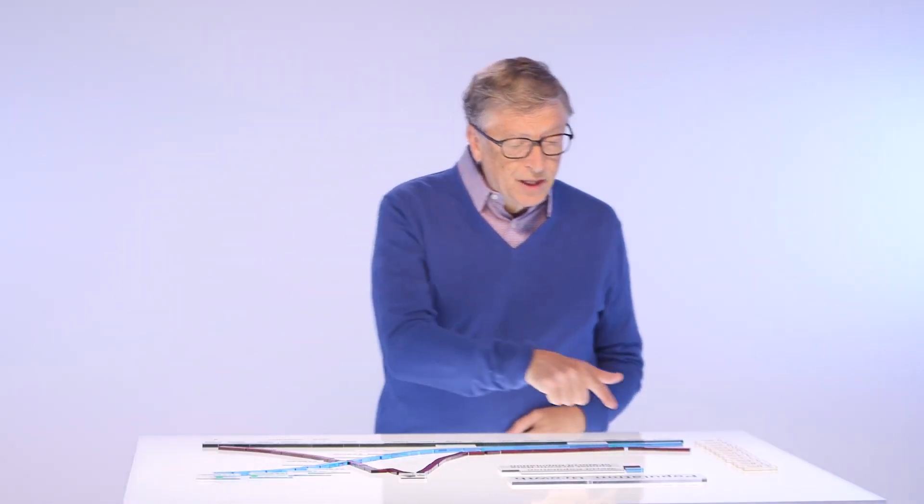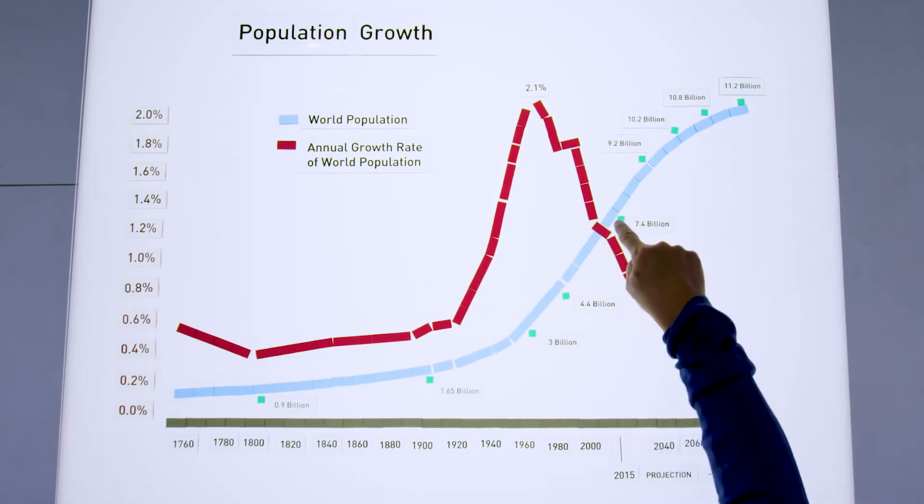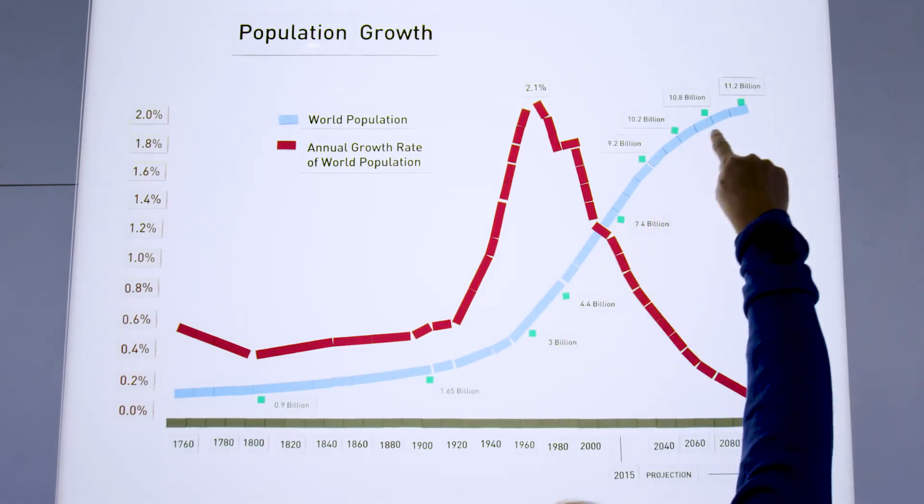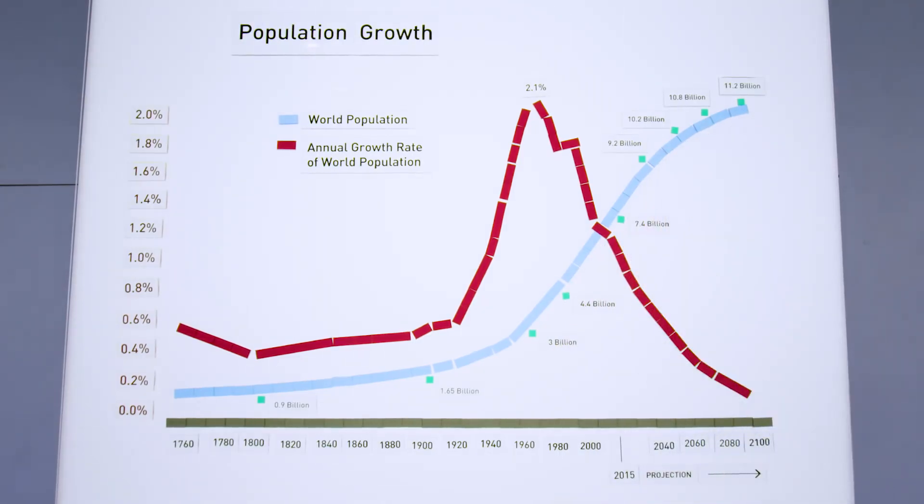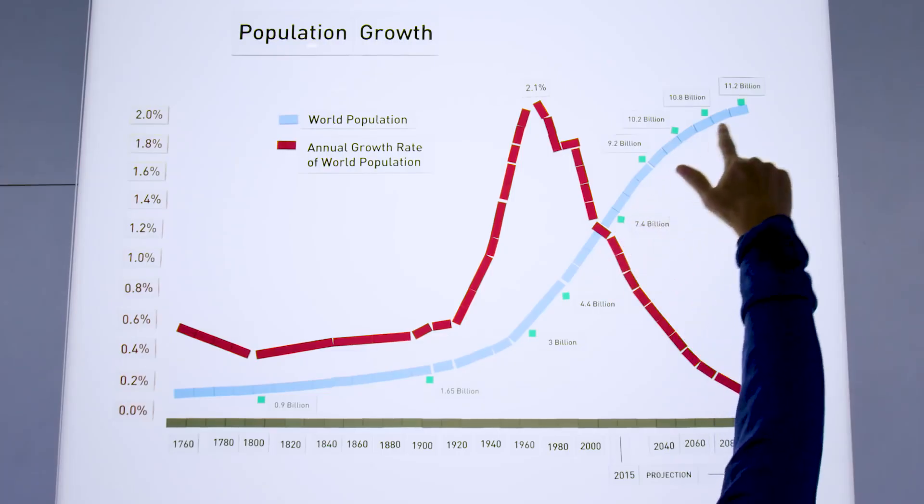So we've taken that chart that shows the global population growth and we've actually extended it out all the way to 2100. And we can see that instead of continuing, it actually flattens out.